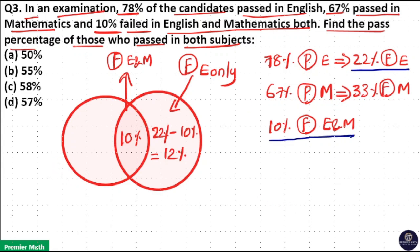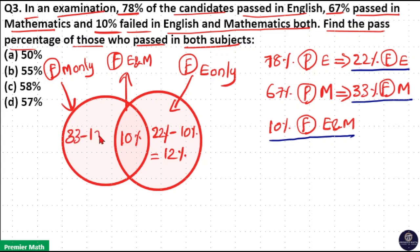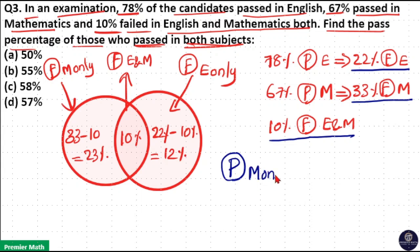Same way, the 33% of students who failed in Maths includes the 10% who failed both. So students who failed in Maths only is 33 minus 10%, which equals 23%. Now we can find those who passed in both subjects, since students who passed Maths only would be included under students who failed English only.